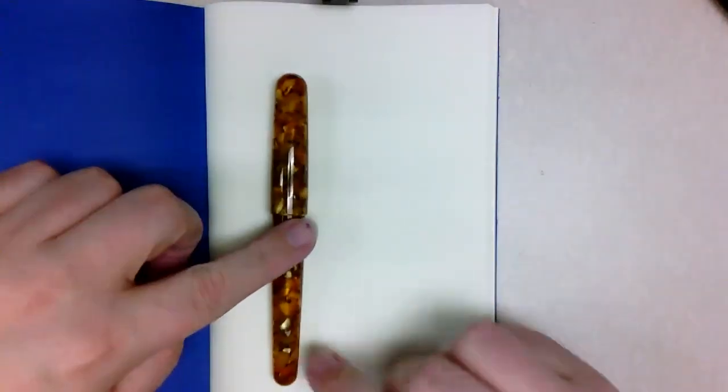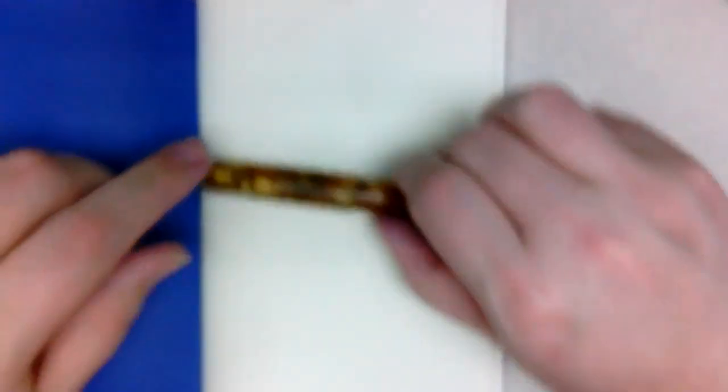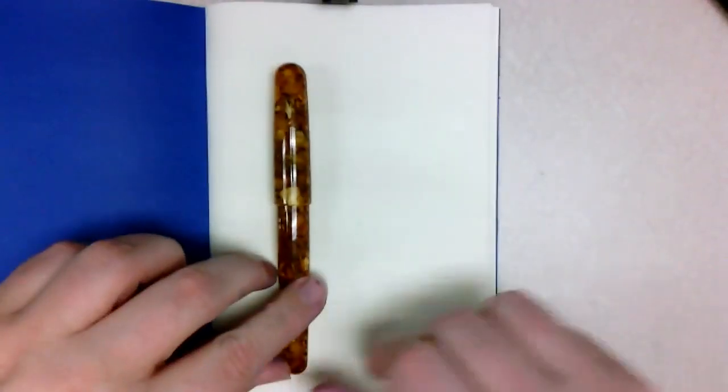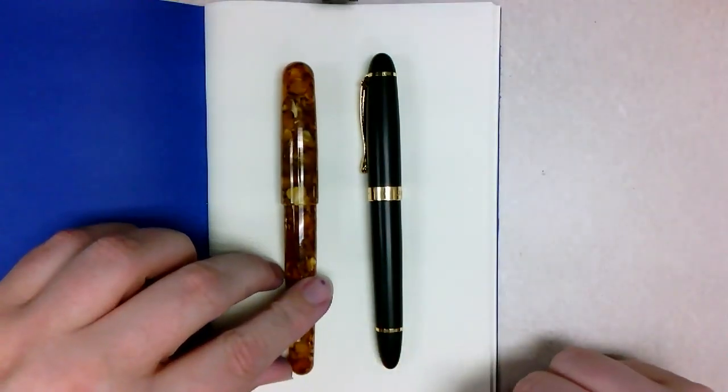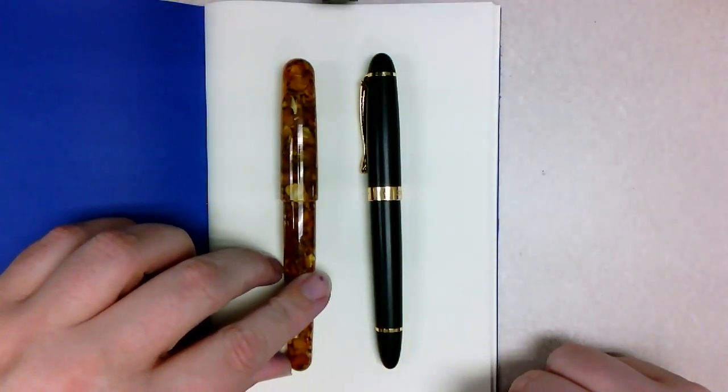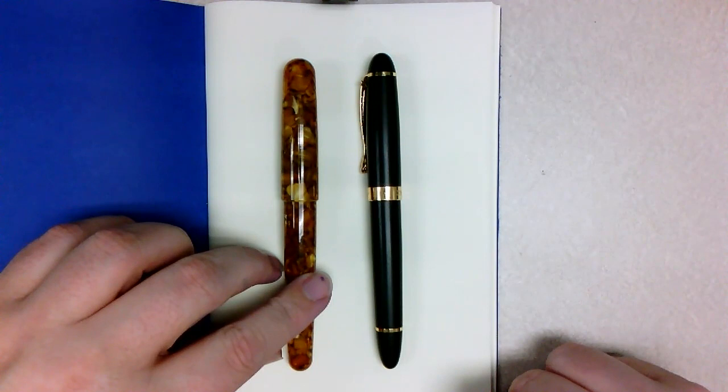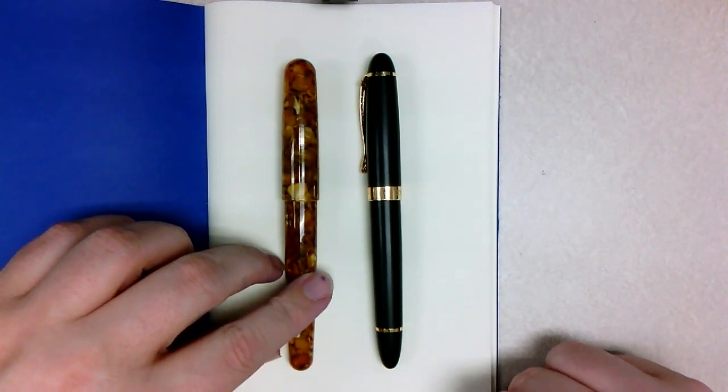It was this very round pen. And just for size comparison, this is a Jinhao 450. So you can see it's very nearly the same size and pretty much the same shape.